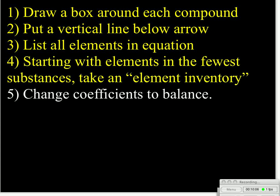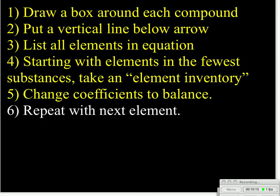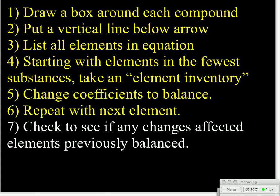Then what we're going to do is we're going to change the coefficients. We'll change the numbers in front of each substance in order to get this to balance. And then we'll go on to the next element and repeat the process. And then we'll check to see if any changes we make, because as we go through, there's a little bit of trial and error here, where we'll change one coefficient to make something balanced, but then it'll change our inventory of something we've already balanced, and we've got to double-check to make sure that we haven't upset something we've already balanced.